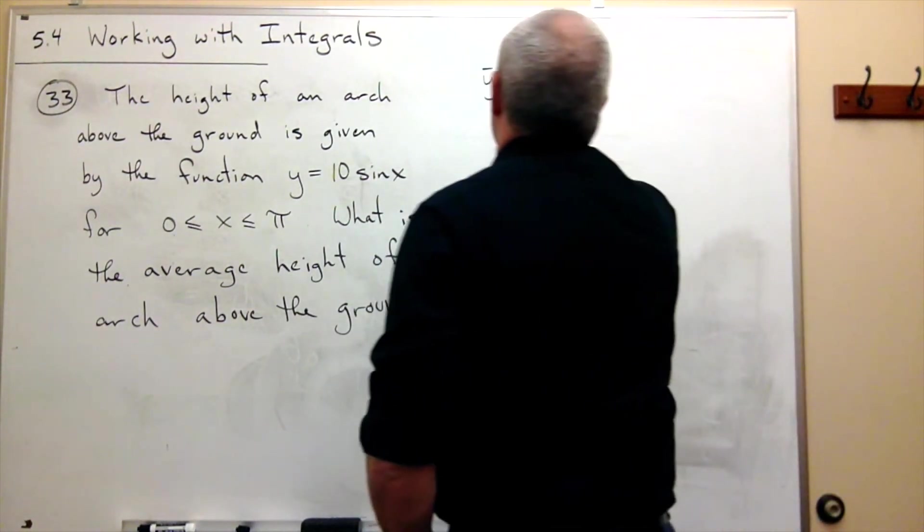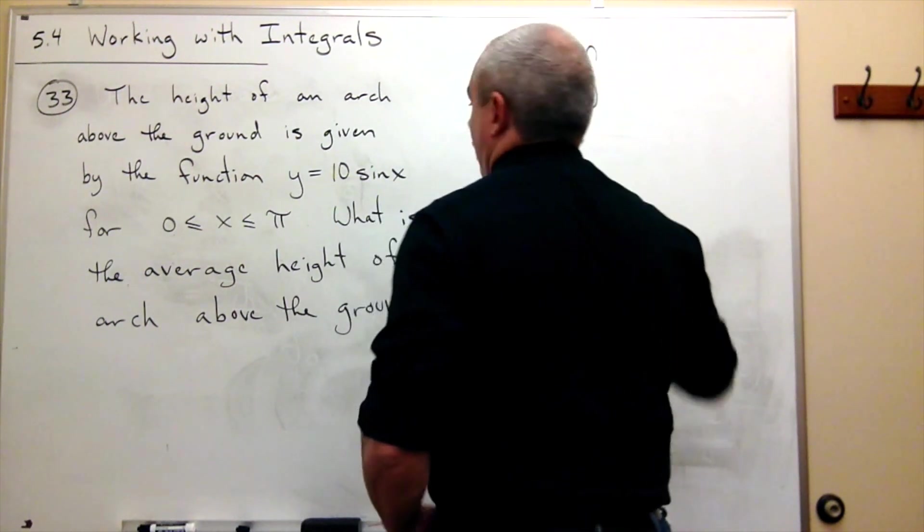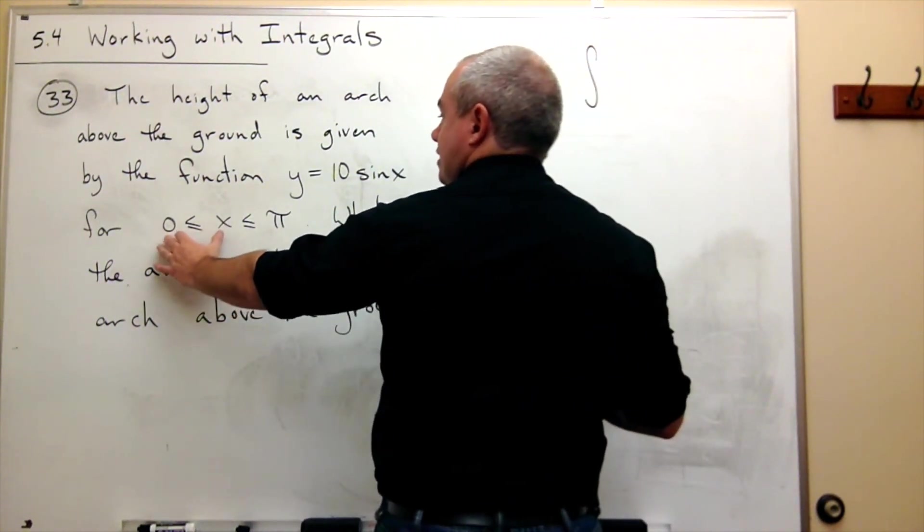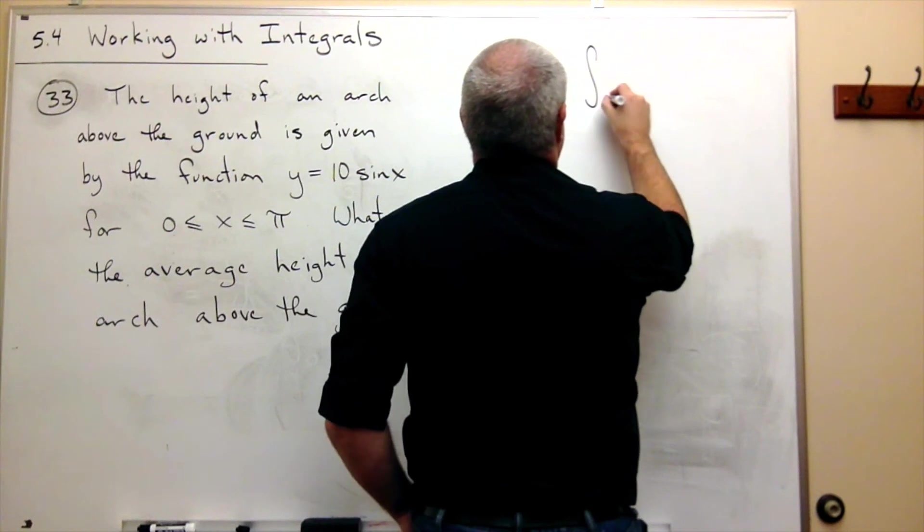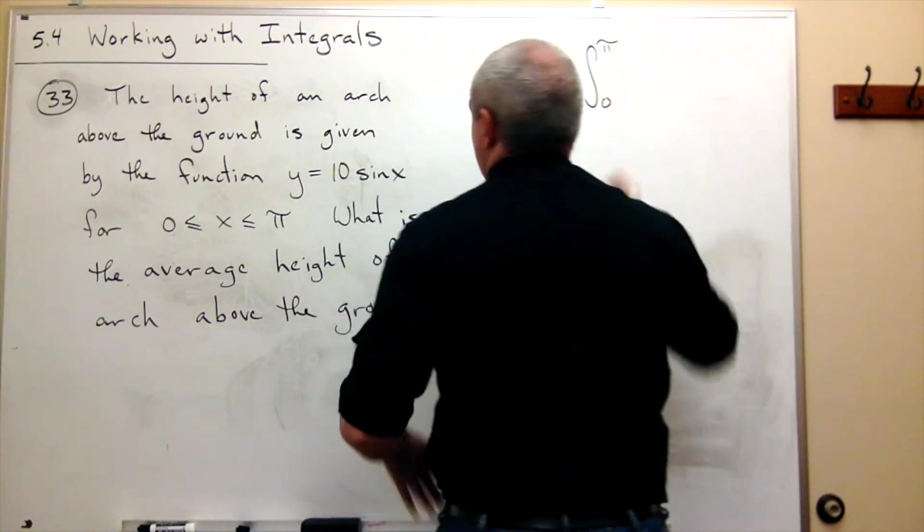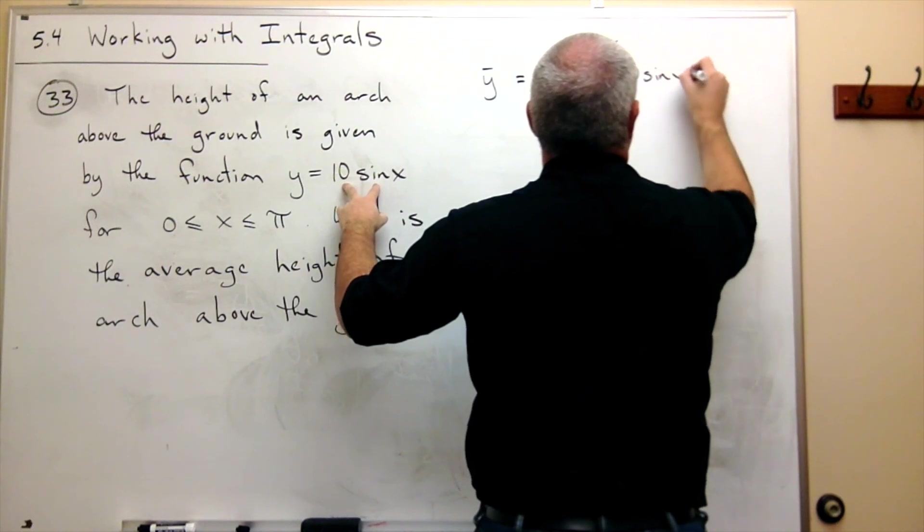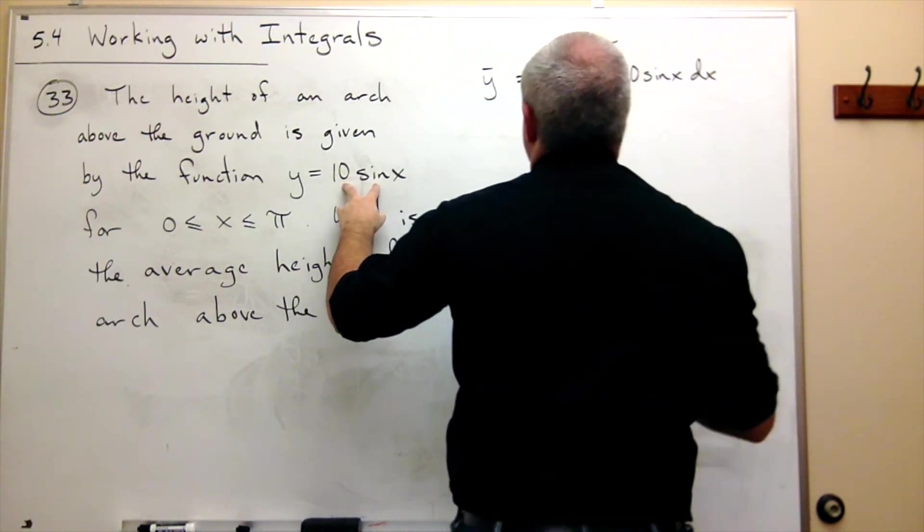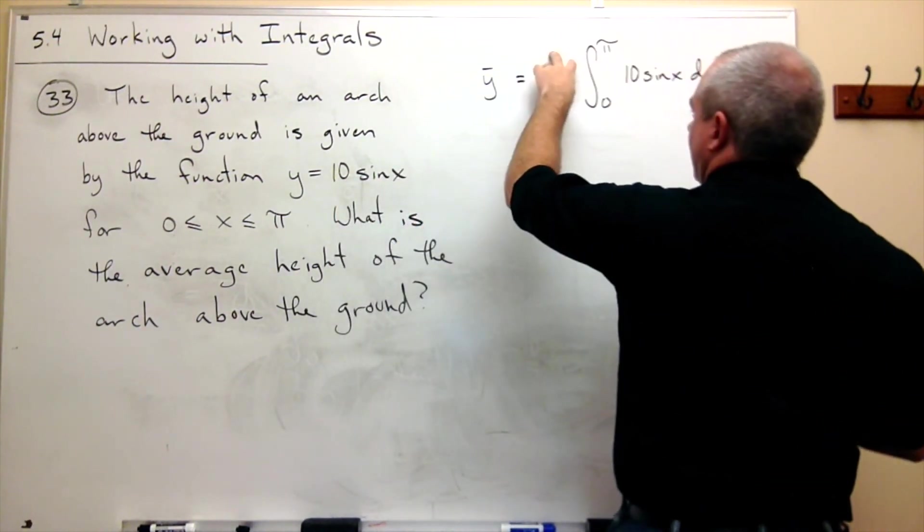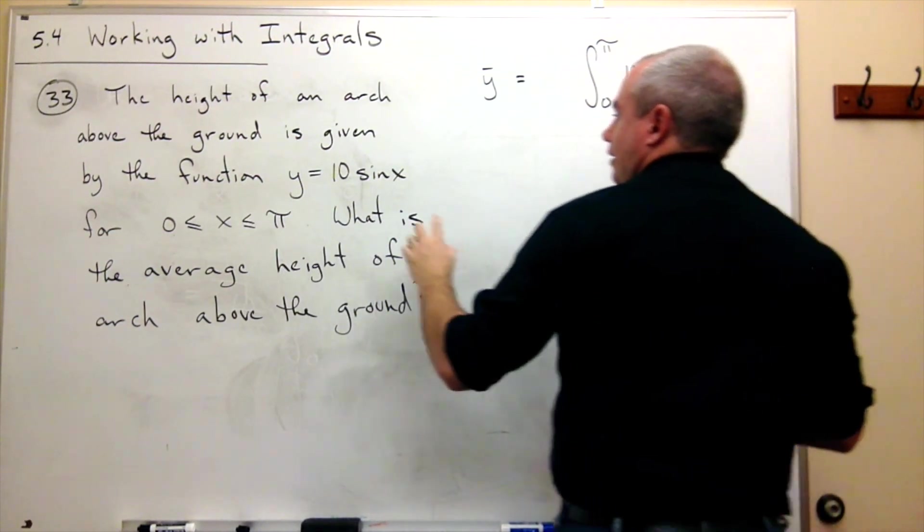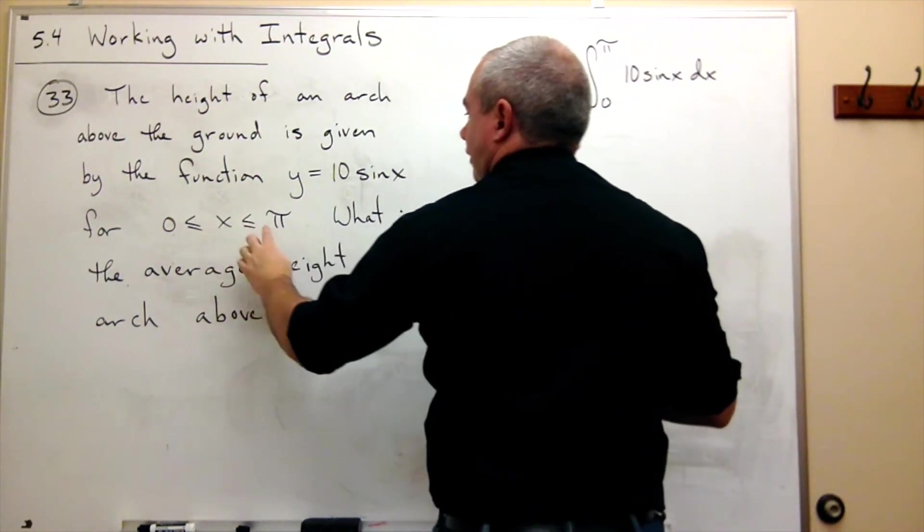It's equal to the integral from our interval, in this case 0 to pi. So I'm integrating from 0 to pi of the function 10 sine x dx, and then I want to multiply that by 1 over the length of the interval. The length of the interval is pi minus 0, which is pi, so I multiply by 1 over pi.